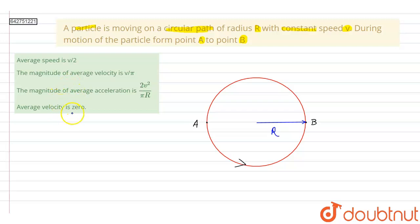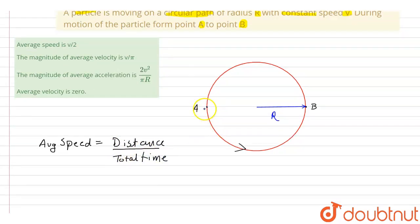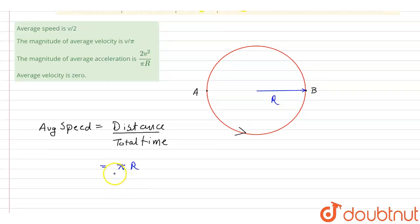And we know that the formula for average speed is total distance divided by total time. So in this case, the total distance will be from point A to point B, that will be equal to pi times R. So pi R divided by...